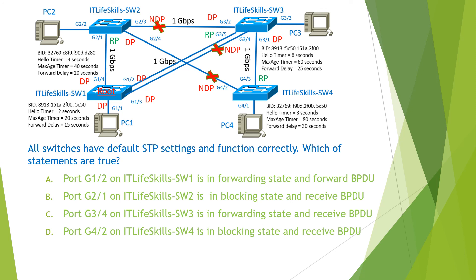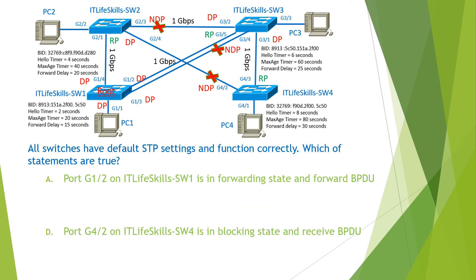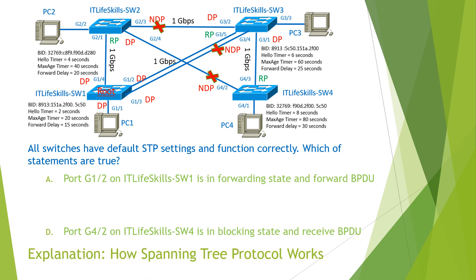Let's look at the answers. Port GS12 on Switch 1 in forwarding state and forwards BPDUs — that is correct. Port GS21 on Switch 2 in blocking state and receives BPDUs — that is not correct. Port GS34 in forwarding state and receives BPDUs — this is not correct. Port GS42 in blocking state and receives BPDUs — this answer is correct. So the answers for this question are A and D. You can find the detailed explanation in the video: how spanning tree protocol works.